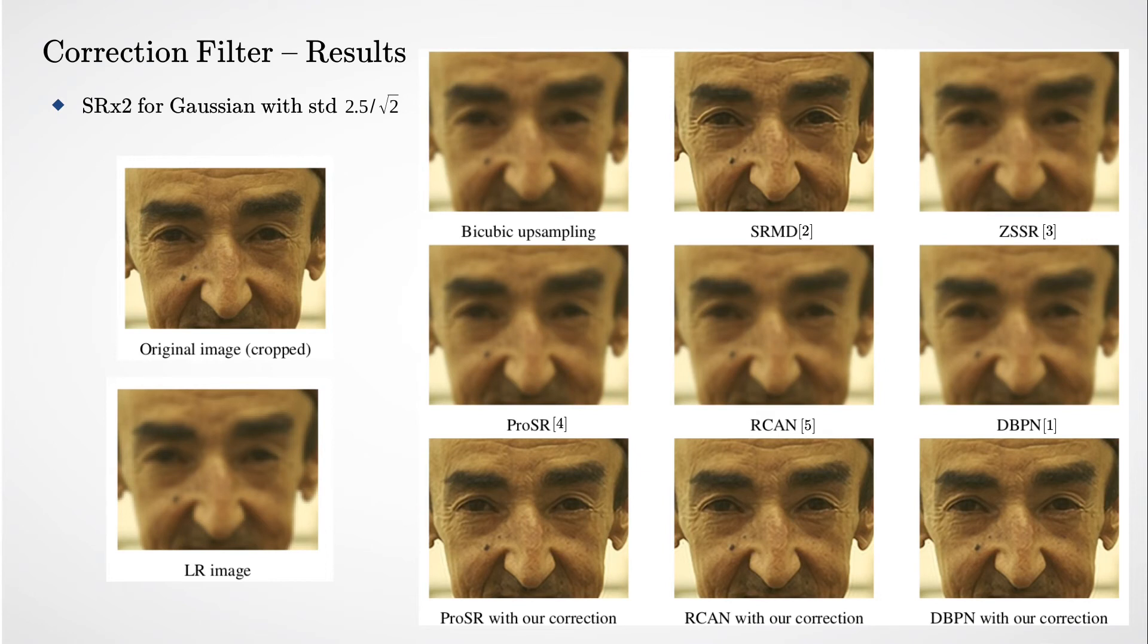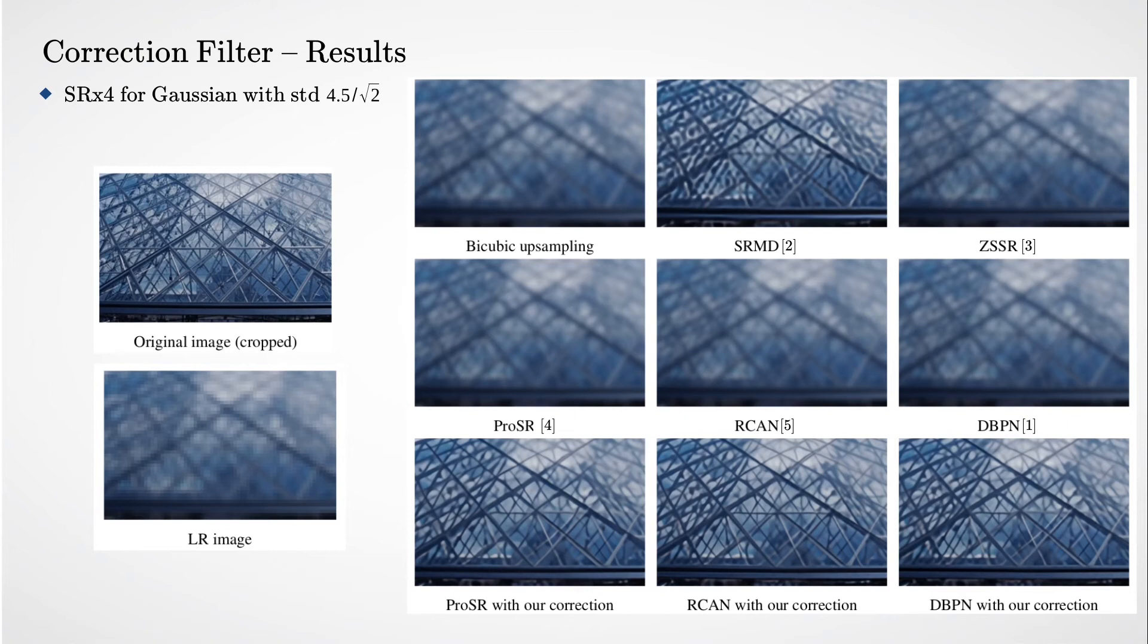We also compare our method to SRMD and ZSSR, where both of them take the downsampling kernel as an input in addition to Y. Similarly, we show the remarkable improvement of our method also for scale factor of 4.